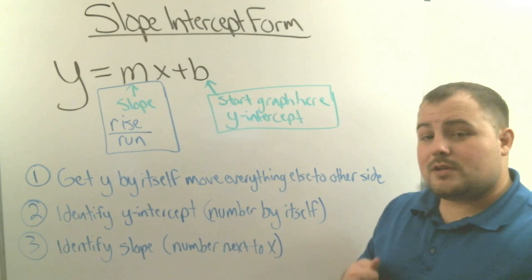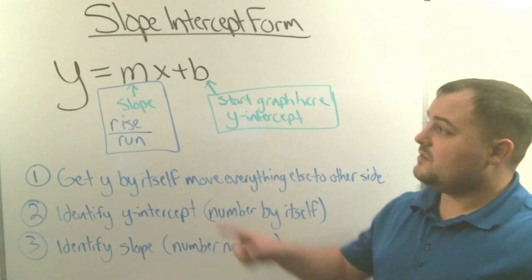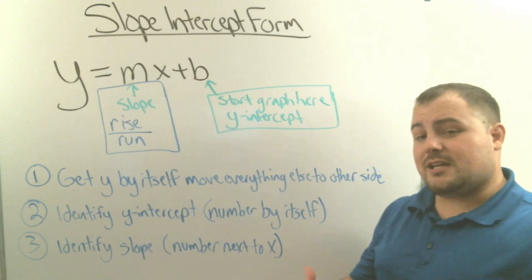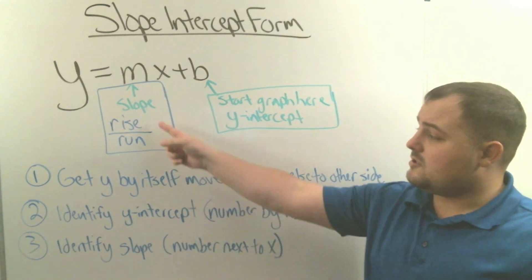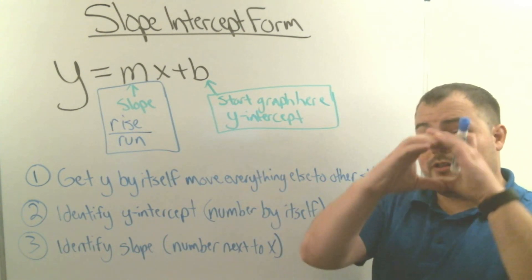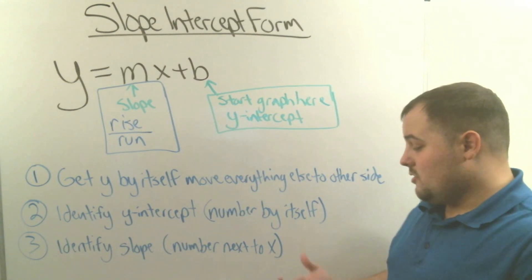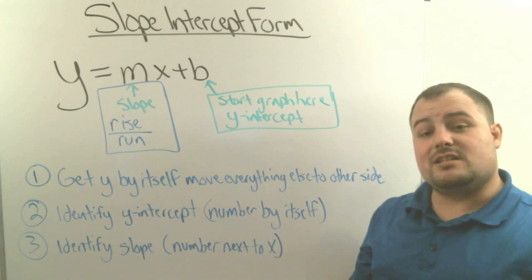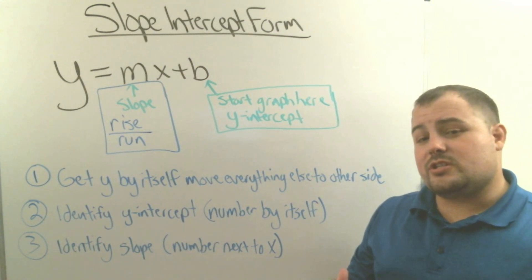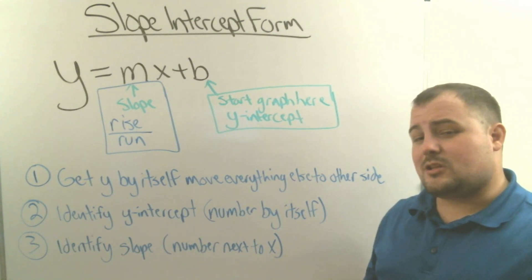The next thing we do is identify the slope — it's the number next to x. The number right next to x is going to tell us our rise over run. Sometimes there's going to be nothing there, and if there's nothing there, you're going to put zero x's. So we're going to write equations in slope-intercept form and graph equations in slope-intercept form. That's our lesson for today.